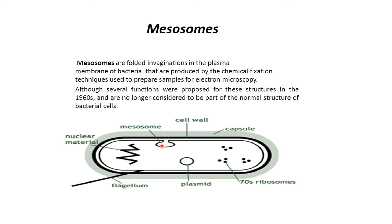This inward projection of the plasma membrane is called the Mesosome, also called chondrioids. Other components of the bacterial cell include the nucleoid — nuclear material — the flagella used for movement, the plasmid or extrachromosomal DNA, and ribosomes that are of the 70S type.